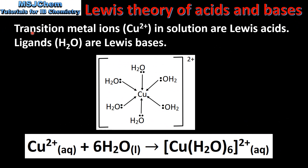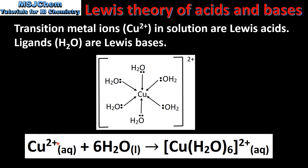Transition metal ions, such as the copper 2+ ion in solution, are Lewis acids. Ligands such as H2O are Lewis bases. Here we have an example of a complex ion formed from a copper 2+ ion and 6 water molecules, which are known as ligands. The central metal ion, which is the copper 2+ ion, is acting as a Lewis acid by accepting these lone pairs of electrons from the water molecules.